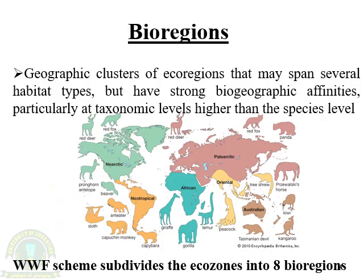Bio-regions are geographic clusters of eco-regions that may span several habitat types but have strong biogeographic affinities, particularly at taxonomic levels higher than the species level — they have affinities between their genera and families. In other words, bio-regions are portions of the earth's surface having an assemblage of fauna and flora with characterizing features distinguishing them from other areas. The total earth has been divided by Sclater and Wallace into six major zoogeographical regions, each containing specific fauna and flora, while the WWF scheme subdivides the ecozones into eight bio-regions.